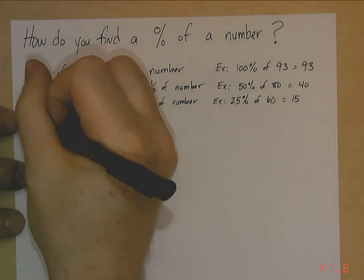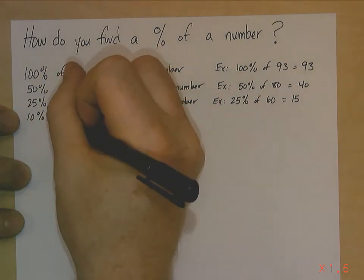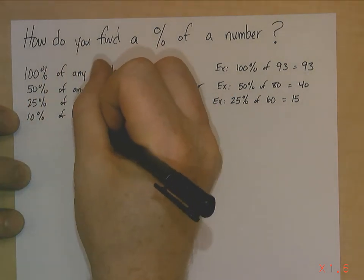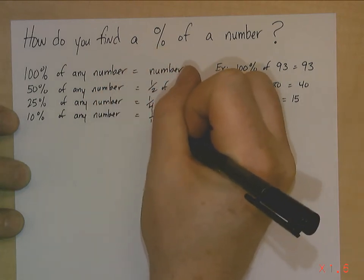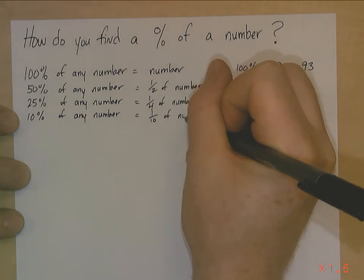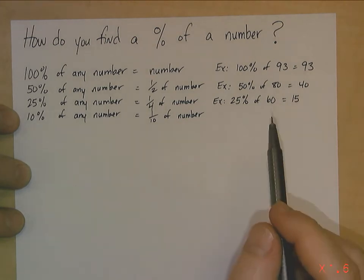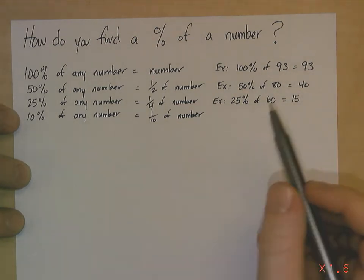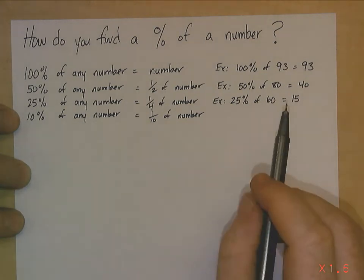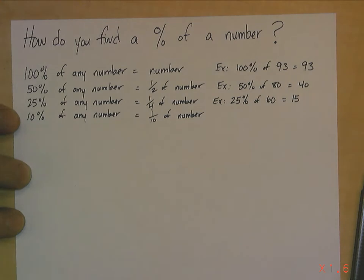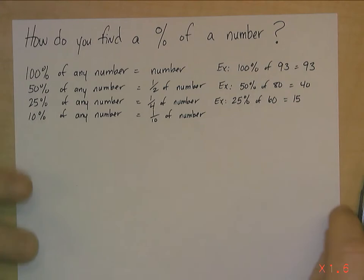The next biggest one that we normally deal with on a daily basis is 10%. So 10% of a number is just one-tenth of that number or divided by 10. Now, for some, that might be difficult. Some of you might have a difficult time dividing by 10. Just like how we would multiply by 10. If I multiply by 10, I just add a zero.